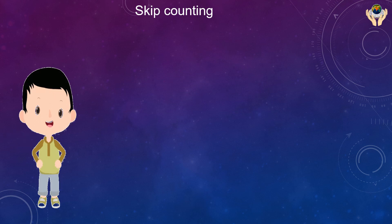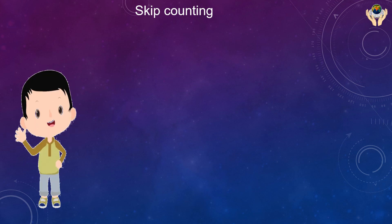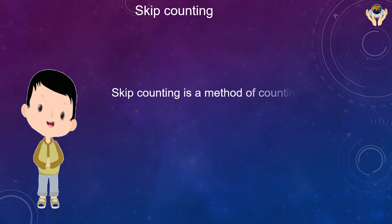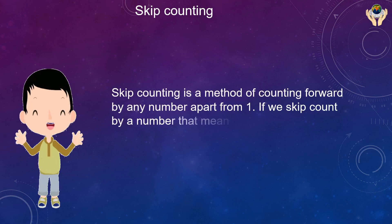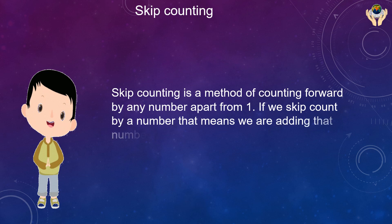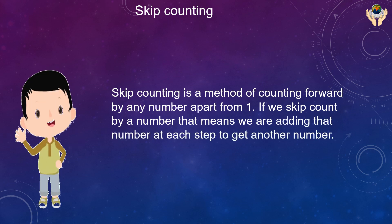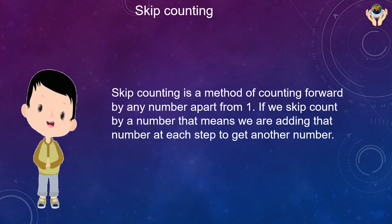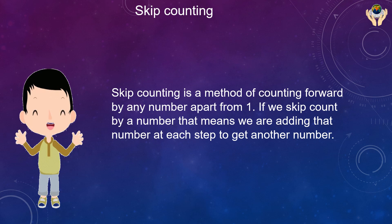Now we are going to do multiplication by the skip counting method. Skip counting is a method of counting forward by any number apart from one. If we skip count by a number, that means we are adding that number at each step to get the next number.